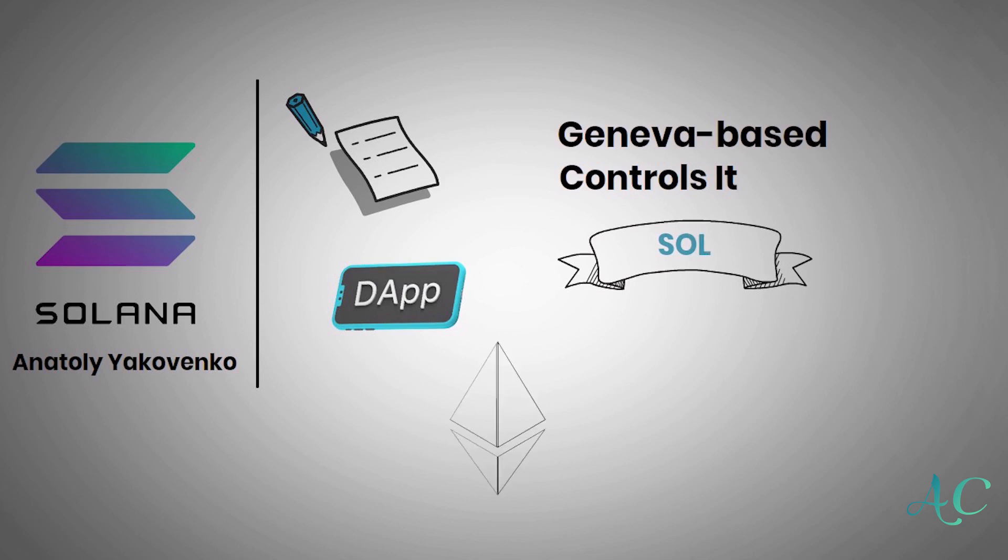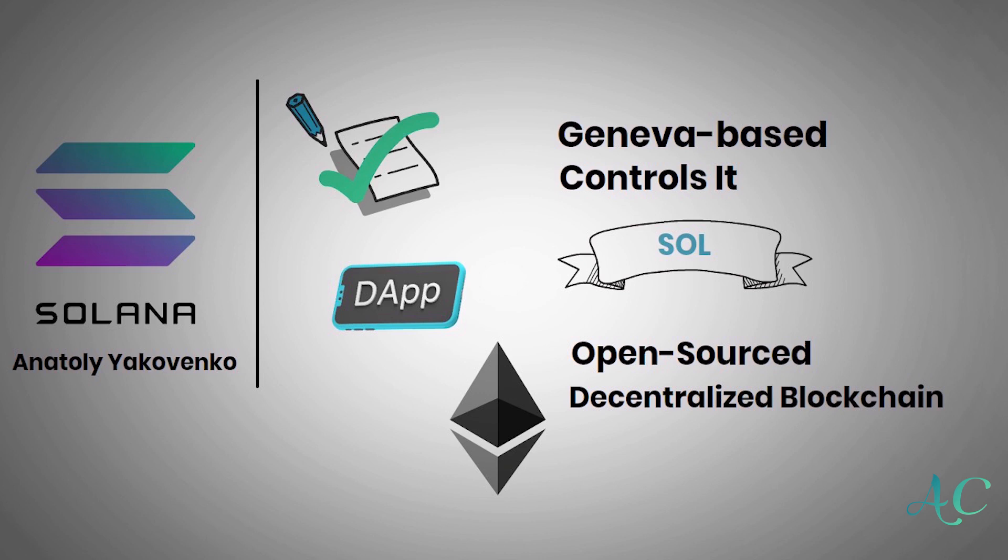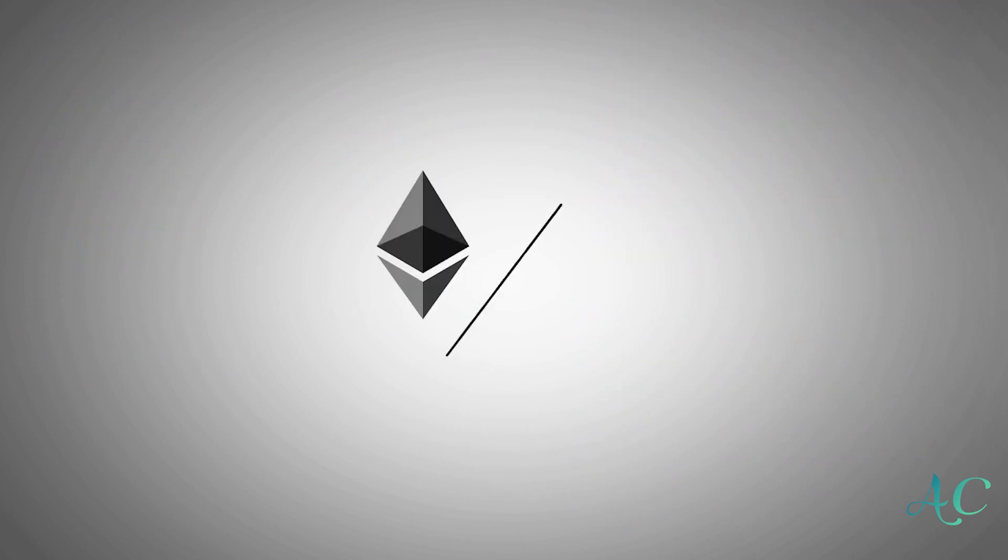Whereas Ethereum is an open source and decentralized blockchain that can allow smart contracts, its native currency is Ether and was founded in 2015 by Vitalik Buterin and Gavin Wood.